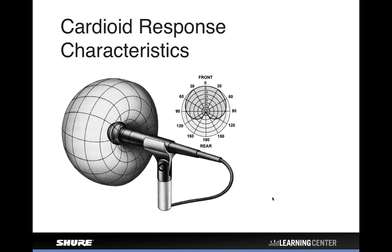Cardioid is the most common directional pattern — it's shaped like a heart (cardiovascular). On a polar graph, zero degrees is on-axis (front of the mic) and 180 degrees is off-axis at the rear, where you get the most rejection. Probably 50–75% of all unidirectional microphones are cardioid. They're forgiving on on-axis performance — you can sneak two people on a cardioid mic. You lose about 6 dB on the sides at 90 degrees, and get the most rejection at the rear.